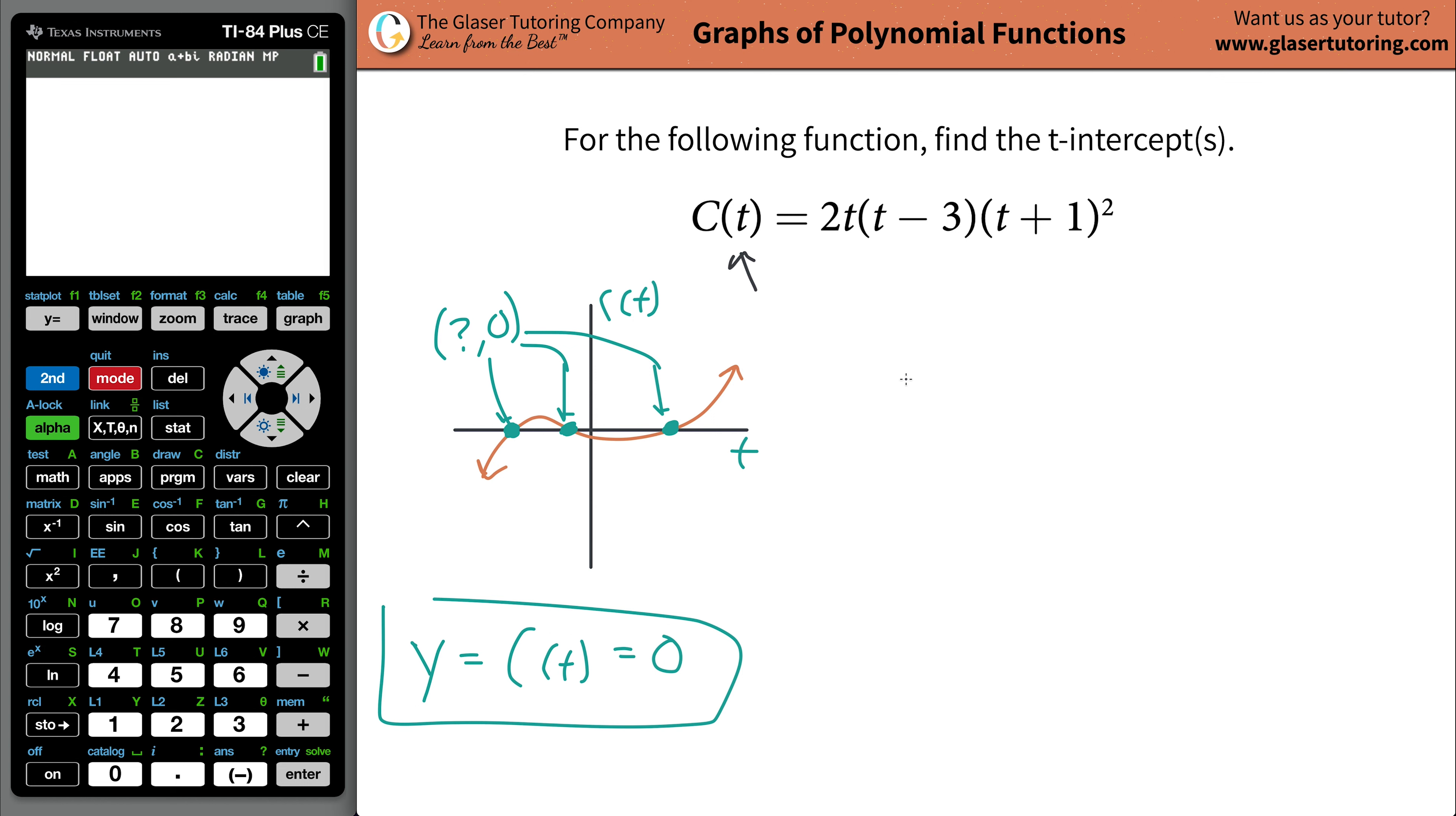Now, plug that in for c of t into this equation. So zero, zero will be equal to 2t multiplied by t minus three multiplied by t plus one squared.